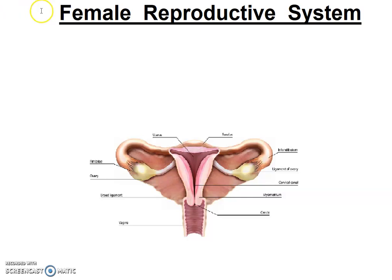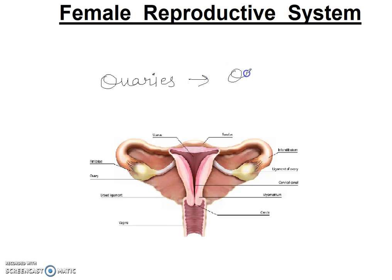So we are going to start here. Female reproductive system — the first thing here is ovaries. Ovaries work is to produce eggs, or you can say ovum. The female reproductive system is very complex, and if we talk about it, there is fertilization and development. The female reproductive system has two roles: one is fertilization.